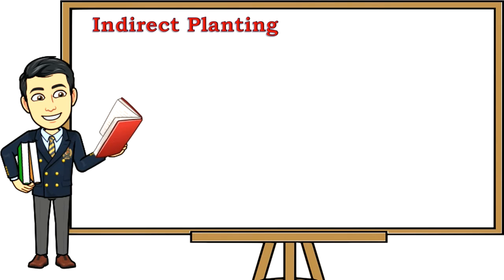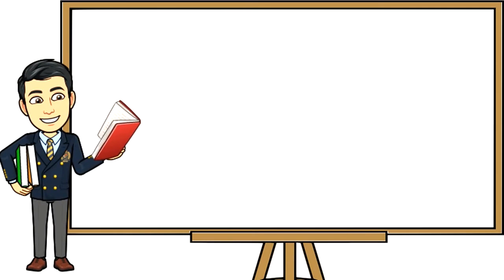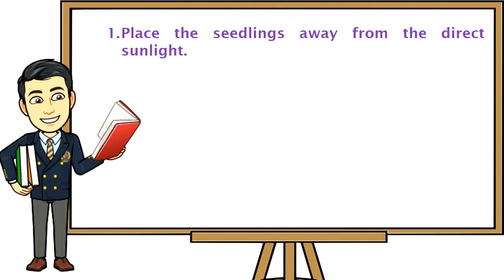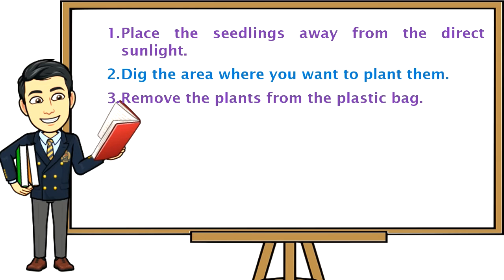In indirect planting, the plant needs to be transferred to its permanent place. Nowadays, you can avail seedlings planted in small plastic bags, ready to transfer. Follow these steps: one, place the seedlings away from direct sunlight and make sure they are healthy and fresh before planting. Two, dig the area where you want to plant them — the length and depth of the hole should match how big the tree will become, leaving two inches allowance to allow the new roots to breathe.